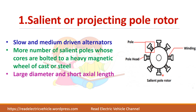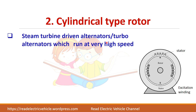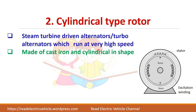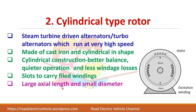Salient pole rotors have a large diameter and short axial length. The cylindrical type rotor is preferred for steam turbine driven alternators which run at very high speed. There is a greater advantage in having the cylindrical structure because they give better balance, quieter operation, and the windage loss will also be less. These rotors are characterized by large axial length and small diameter.